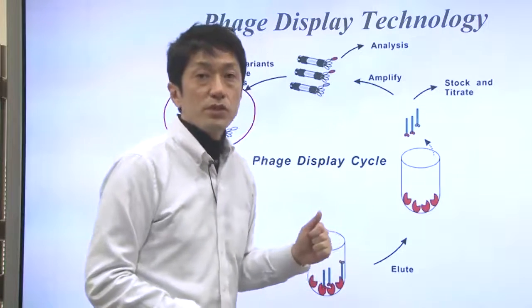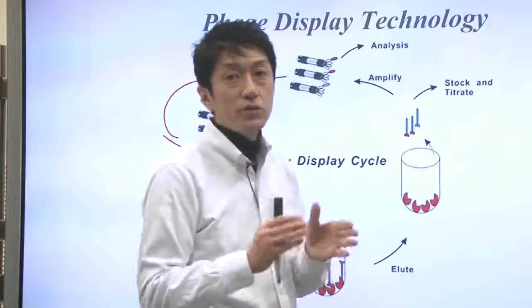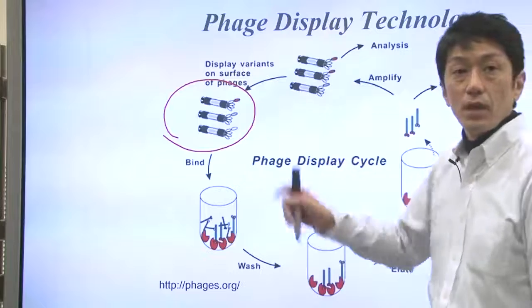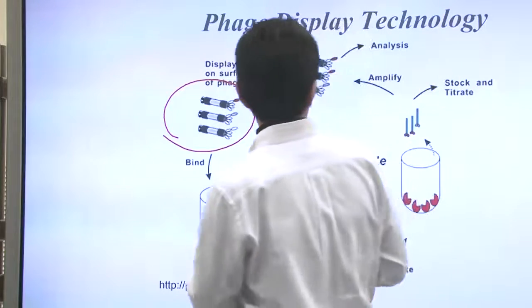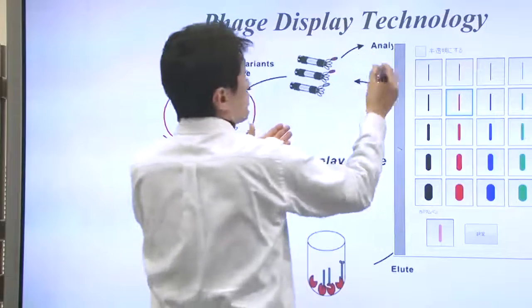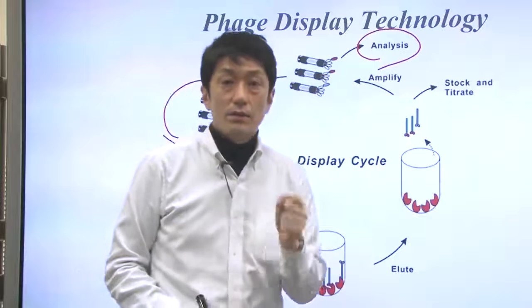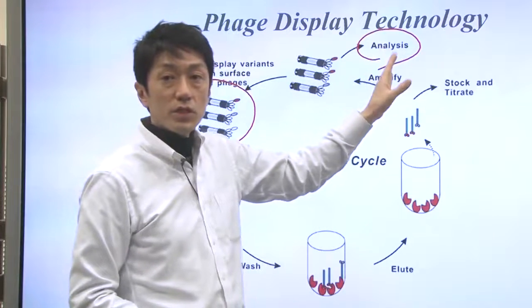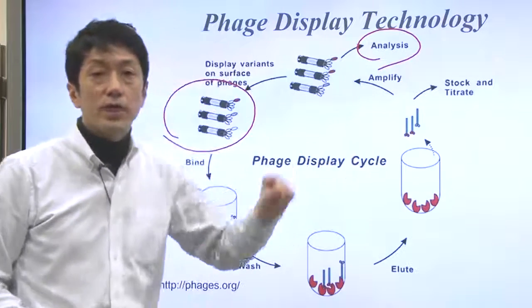When these procedures are repeated, the phages that bind strongly to the protein of interest will remain. Finally, DNA is extracted from the phage and analyzed. The DNA sequence of the phage is used to identify the peptides that bind to protein X.